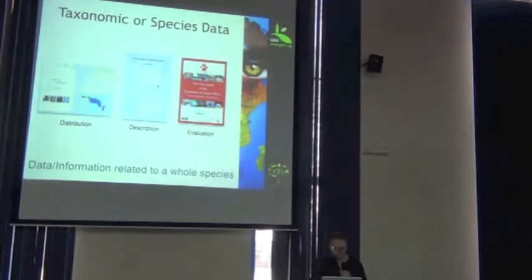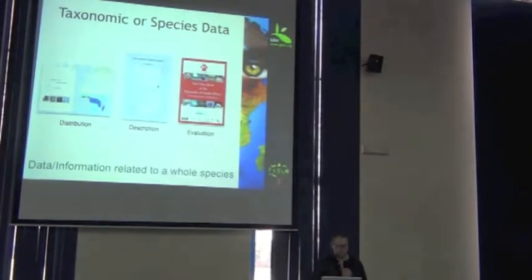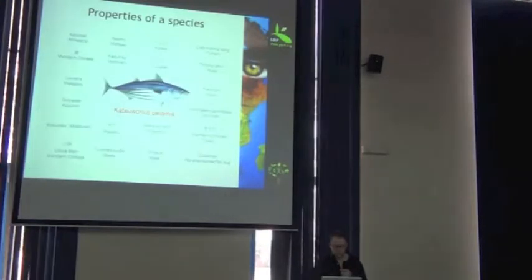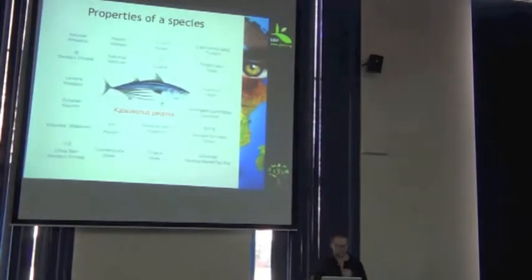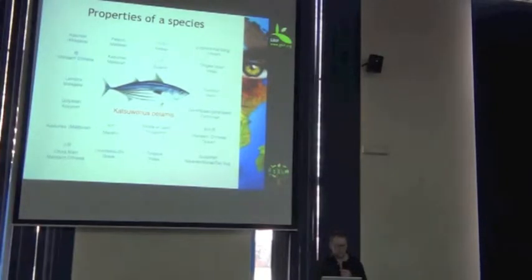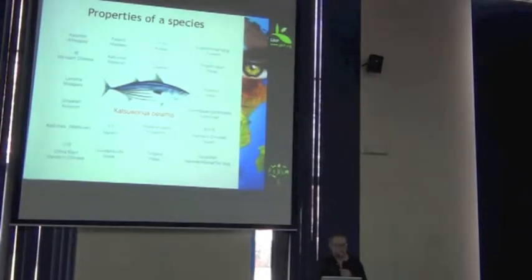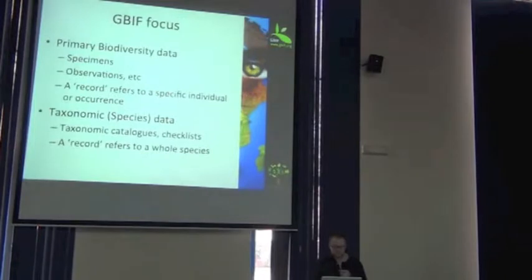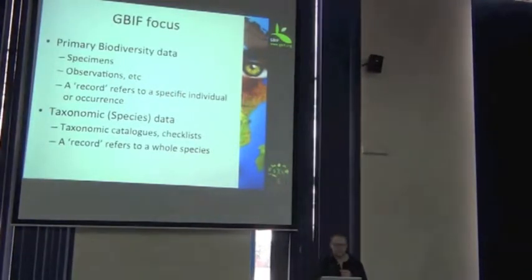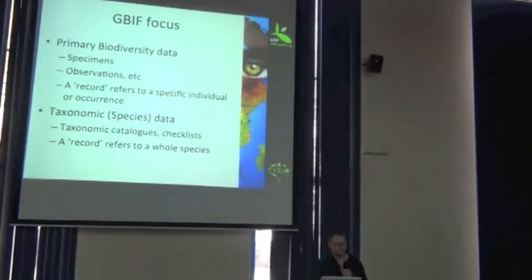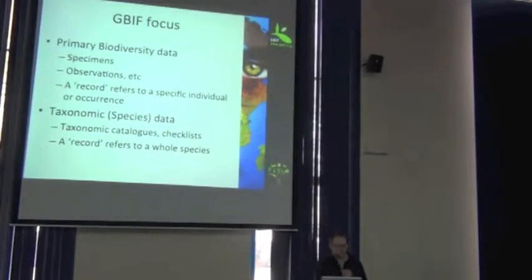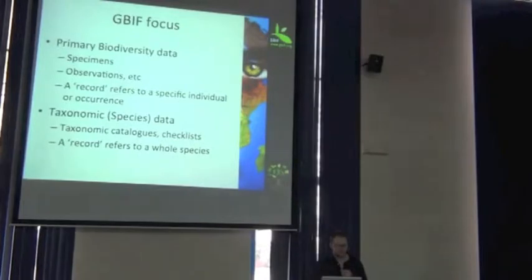Taxonomic data, quickly. This is information related to a species, and you can describe many different properties of a species. There are many different ways to do that, in many different languages. So, that's our focus — that's the type of information that we're trying to publish: occurrence data and taxonomic data.